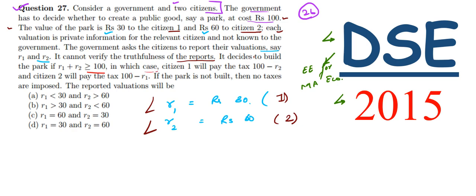In which case, citizen 1 will pay the tax 100 minus R2 and citizen 2 will pay the tax 100 minus R1. If the park is not built, then no taxes are imposed.